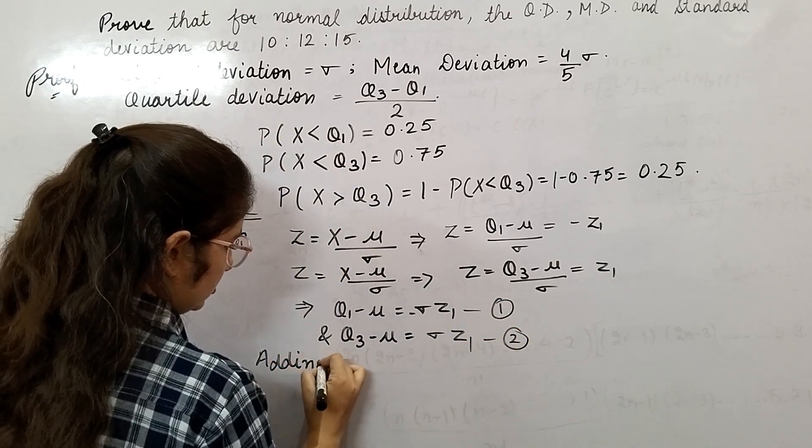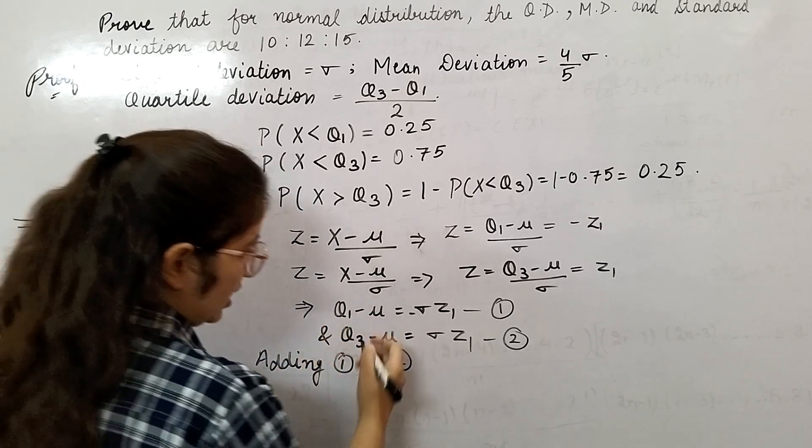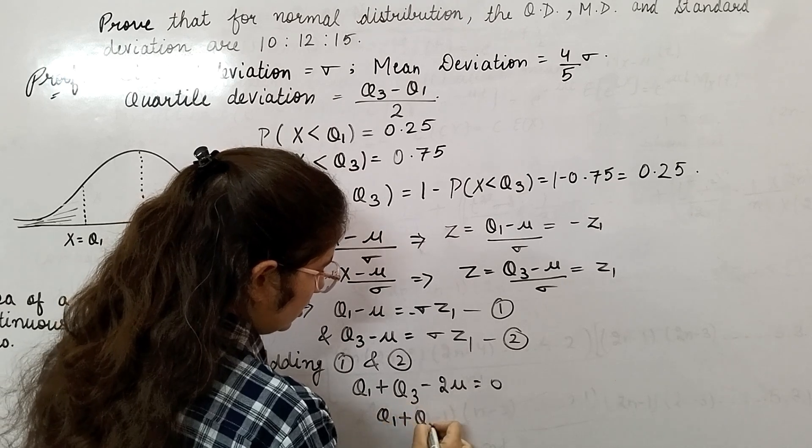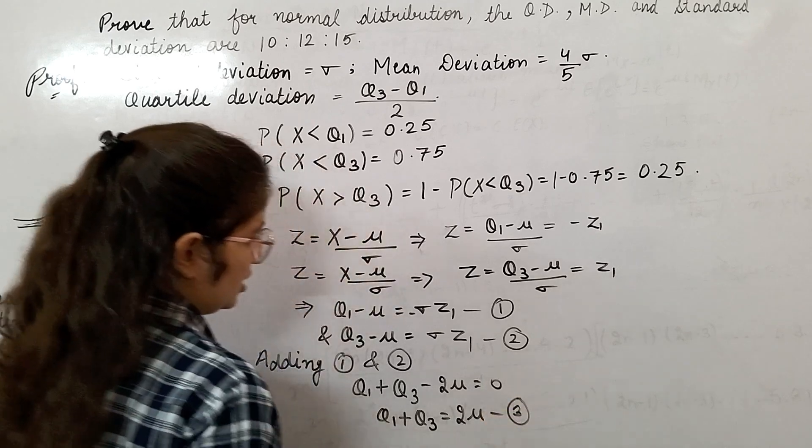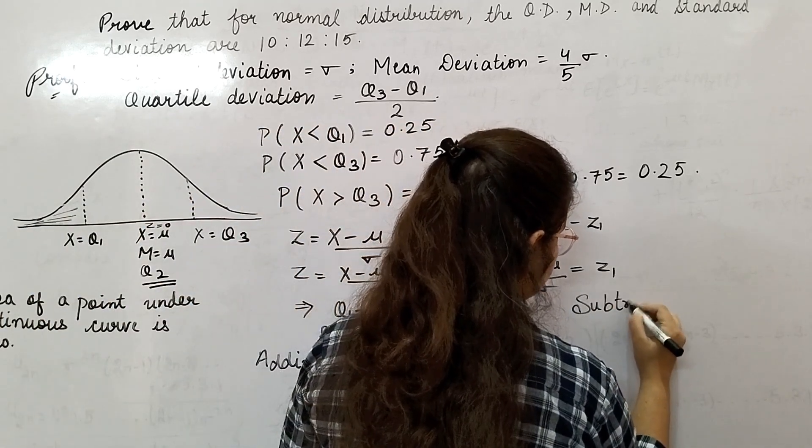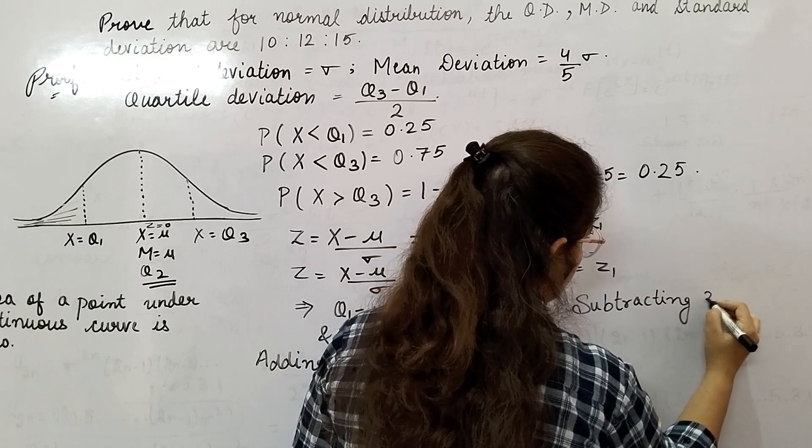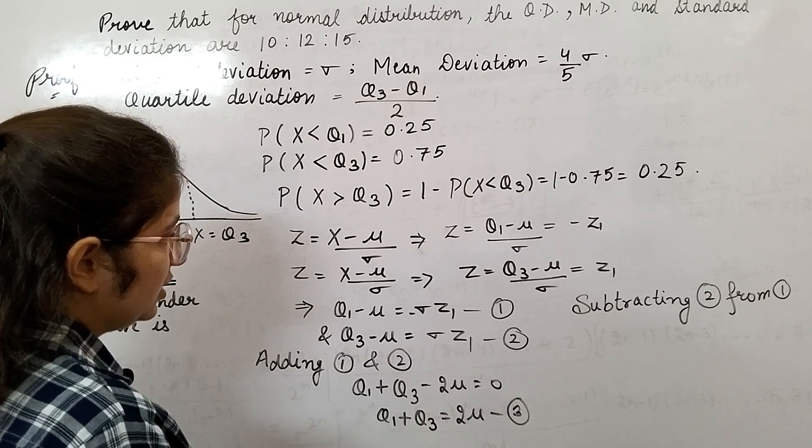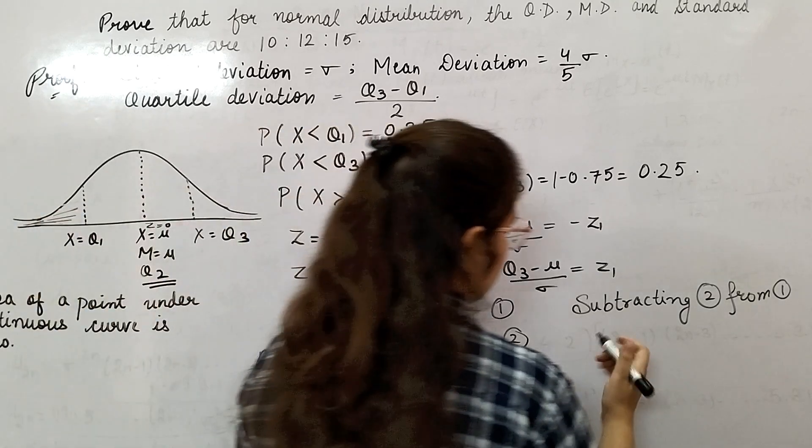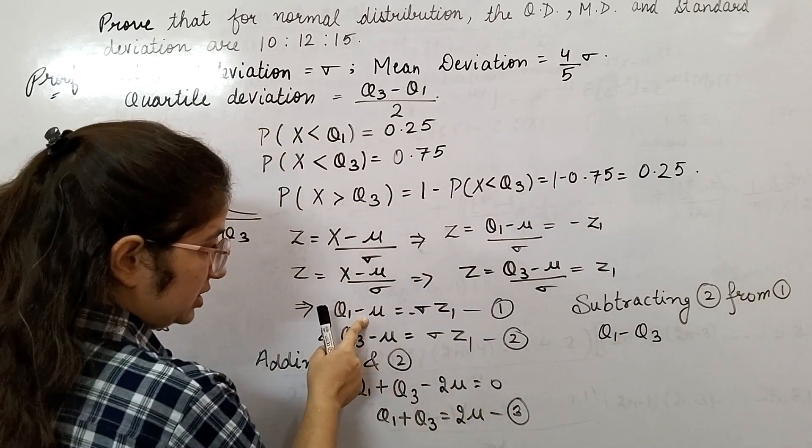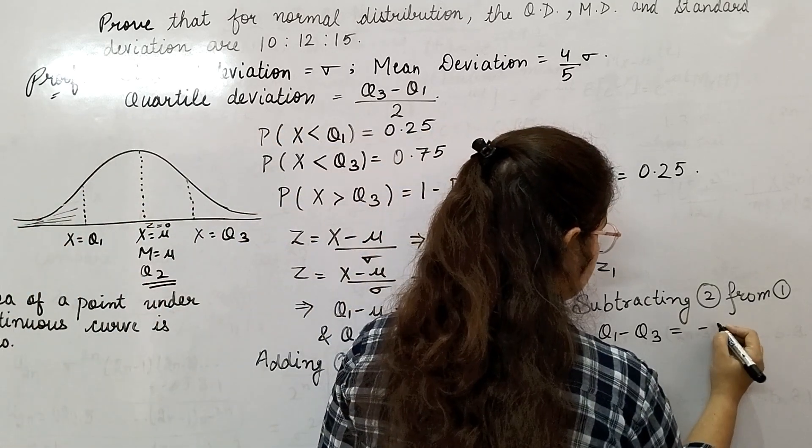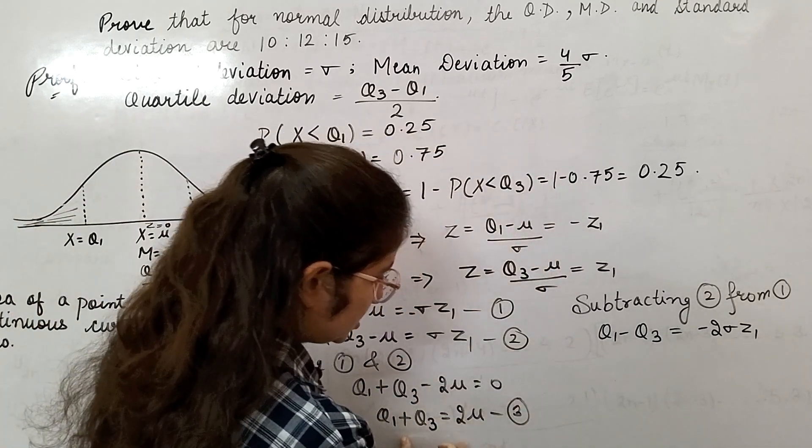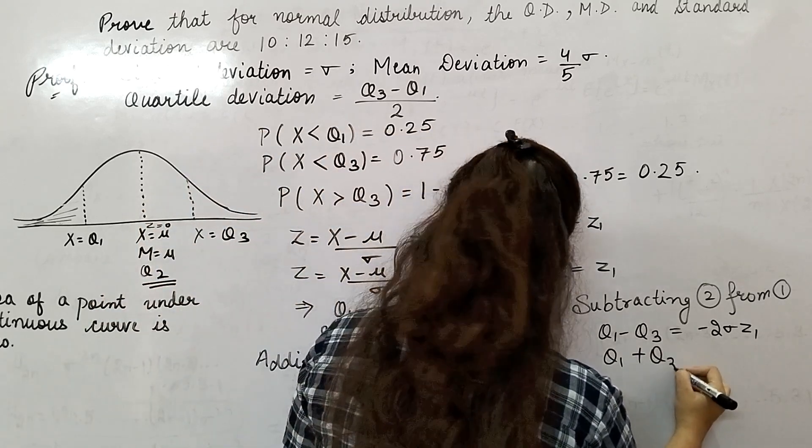Adding 1 and 2, you will get q1 plus q3 minus 2 mu equals 0. From here, q1 plus q3 equals 2 mu—this is equation 3. Now subtract these two. Subtracting 2 from 1, you will get q1 minus q3 equals minus 2 sigma z1, when you subtract 2 from 1.